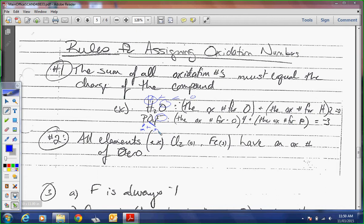So number two, all elements, chlorine, iron, whatever, every element has an oxidation number of zero. It also has a charge of zero, but it has the oxidation number of zero. Okay? Third rule.